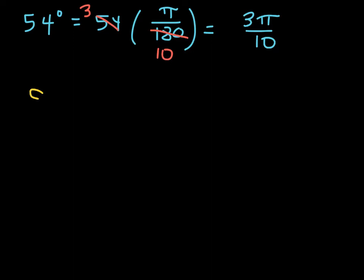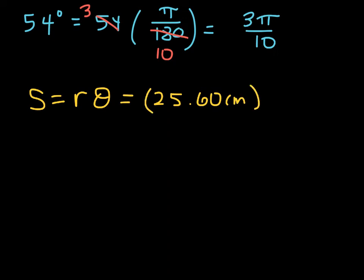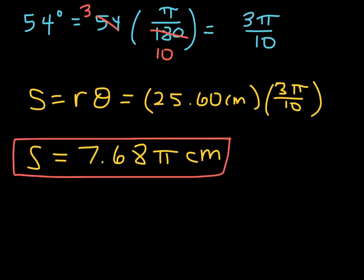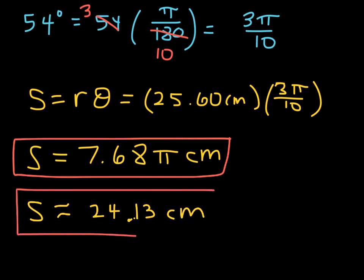Now I can use the formula. The arc length equals the product of the radius and the radian measure of theta: 25.60 times 3π/10 radians. The exact answer in terms of pi is 7.68π centimeters — found by taking 25.60, multiplying by 3, then dividing by 10, leaving pi in the answer. The approximation: take 7.68 and multiply by pi on your calculator, and you get approximately 24.13 centimeters as the approximate length of that arc.